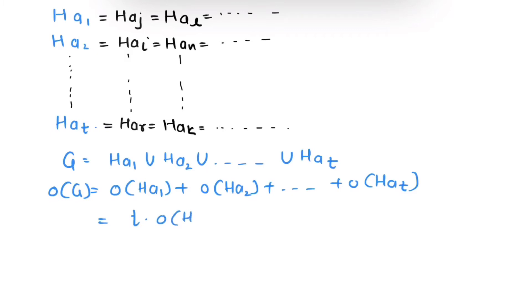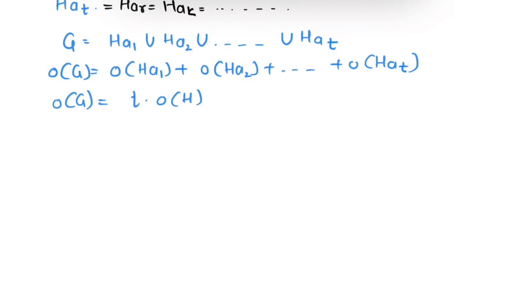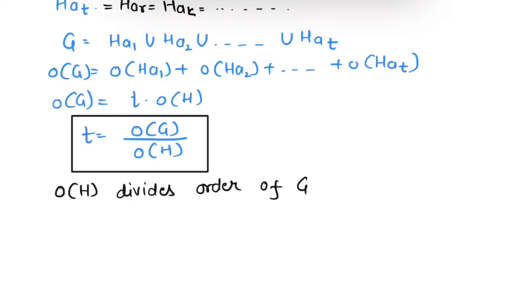Now we have t equals order of G over order of H. Since t is a natural number, we can conclude that order of H divides order of G. I hope you have learned the proof of this theorem.